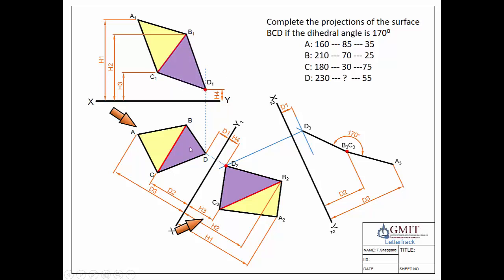It's worth mentioning that I marked the 170 degrees on one side — I could have marked it on the underside, but that would give a different point, placing D1 higher up. How you know which is correct depends on whether the surface is bending out 170 degrees or bending in 170 degrees. The way to determine which is correct is to look at your 3D graphic or the example given in the question itself. It could be either one, and it would depend on that 3D graphic.